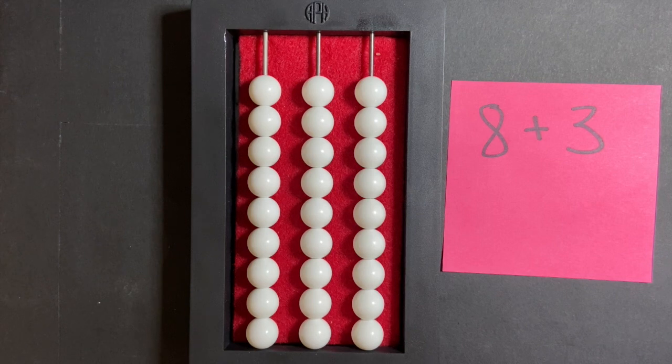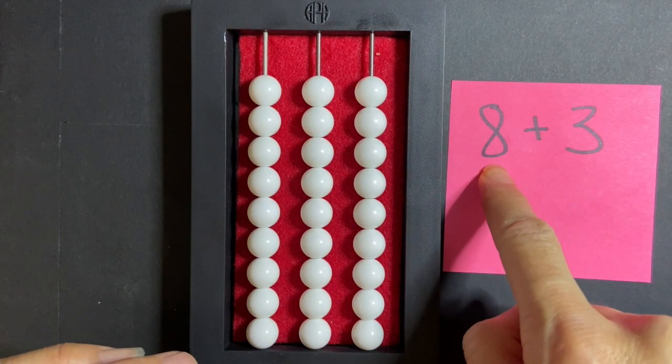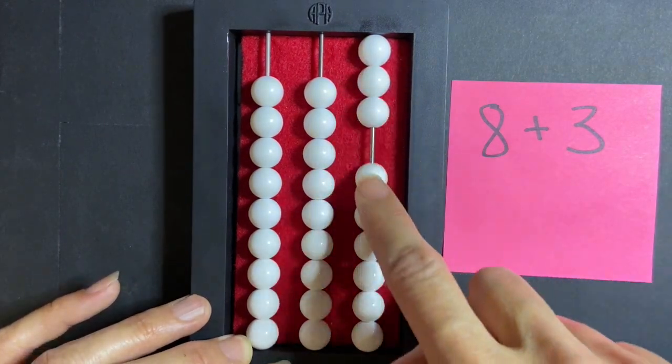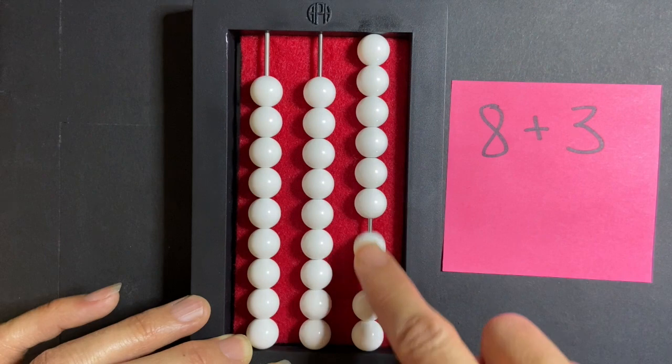So let's start off by setting our first number using the counting method and our first number, our first addend here is 8. 1, 2, 3, 4, 5, 6, 7, 8.